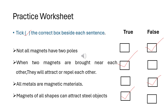Practice worksheet — Tick the correct box beside each sentence. 'Not all magnets have two poles' — False. 'When two magnets are brought near each other, they attract or repel each other' — True. 'All metals are magnetic materials' — False. 'Magnets of all shapes can attract steel objects' — True.